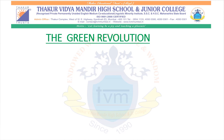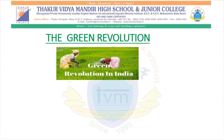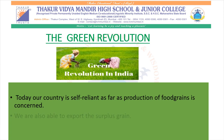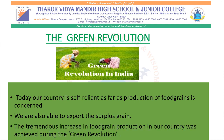The Green Revolution. Today, due to this, our country is self-reliant as far as production of food grains is concerned, and we are also able to export the surplus grain. The Green Revolution in India refers to a period when Indian agriculture was converted to an industrial system due to the adoption of modern methods and technology such as the use of improved seeds, tractors, irrigation facilities, pesticides, use of fertilizers, etc. The tremendous increase in food grain production in our country was achieved during this period of the Green Revolution.